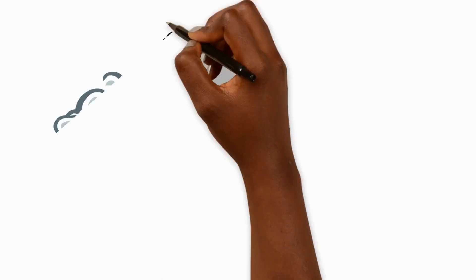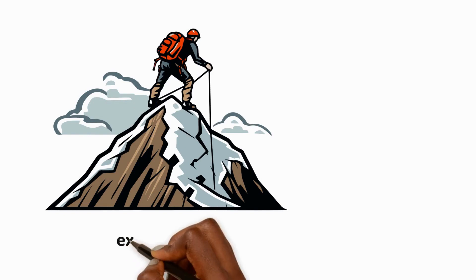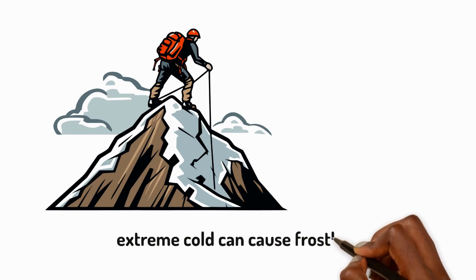Freezing can also be dangerous. In extremely cold weather, parts of our body, like fingers and toes, can freeze, which is called frostbite. Parts of blood can start to freeze too, forming crystals and blocking oxygen, causing damage to parts of the body.